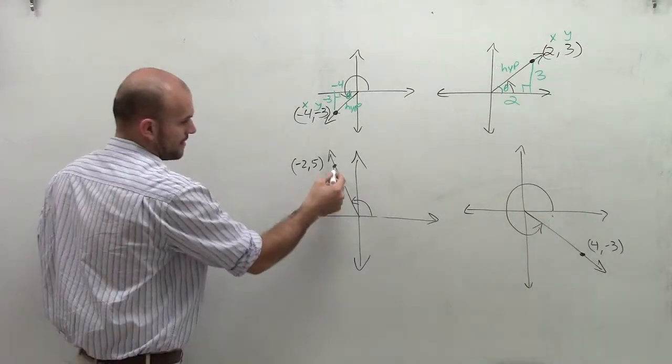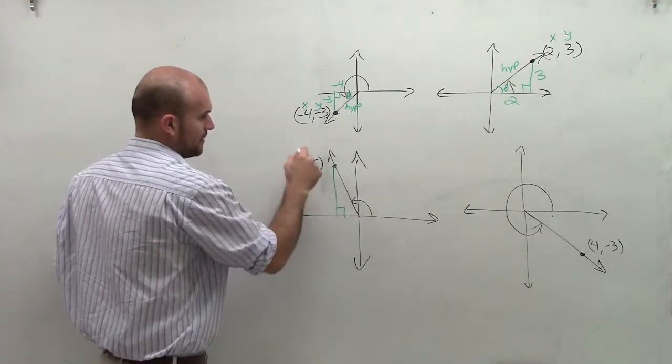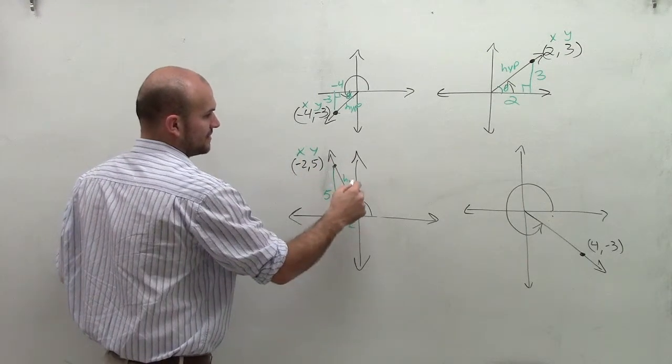For this triangle, I create this perpendicular line. Here's my 90 degree angle. My x represents there. Here's my 5 and my hypotenuse.